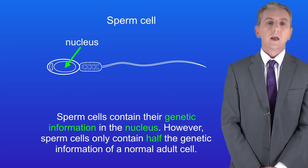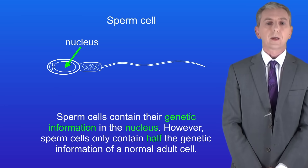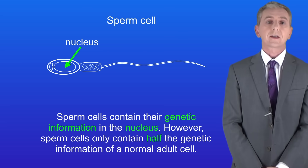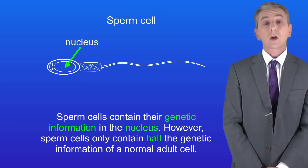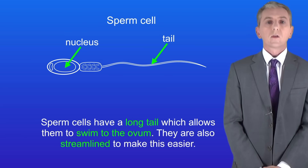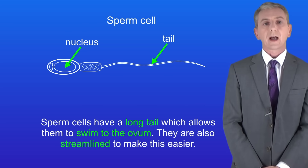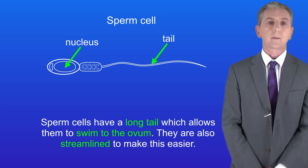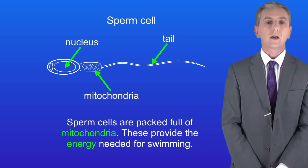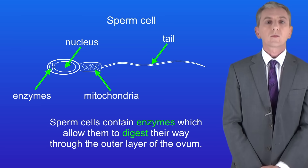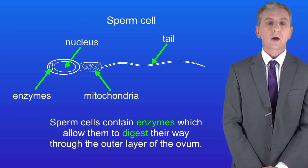Just like any animal cell, sperm cells contain their genetic information in the nucleus. However, sperm cells only contain half the genetic information of a normal adult cell, and we're going to see more on that when we look at reproduction in a later video. Sperm cells have a long tail which allows them to swim to the ovum, and they're also streamlined to make this easier. Sperm cells are packed full of mitochondria, which provide the energy needed for swimming. Finally, sperm cells contain enzymes which allow them to digest their way through the outer layer of the ovum.